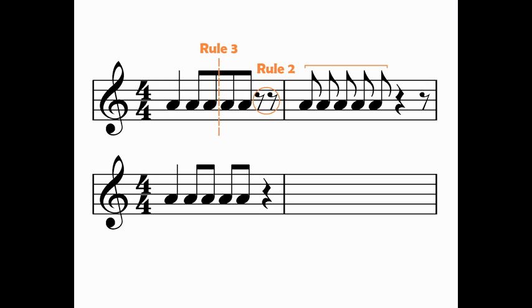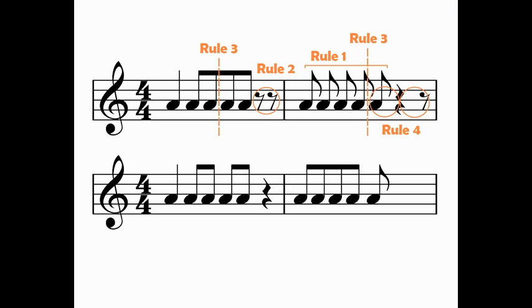The second bar starts with five unbeamed quavers. Rule 1 tells us we may beam the first four quavers in a 4/4 bar together. I cannot beam the fifth quaver because I need to maintain a divide down the middle of my 4/4 bar. The last half of the second bar is problematic because the quaver beat is incomplete. If we swap the quaver and crotchet rest we can clearly see beats three and four. Listening to the original and new version together, they sound exactly the same but the new version is considerably easier to read.